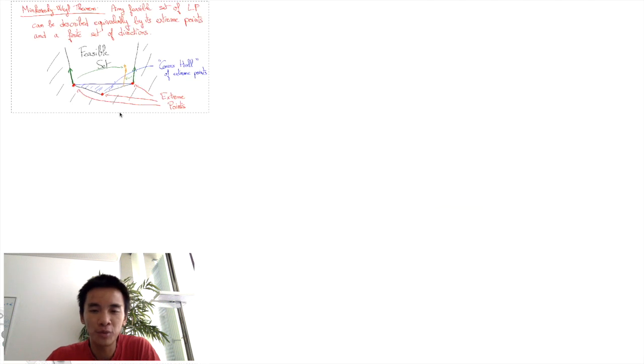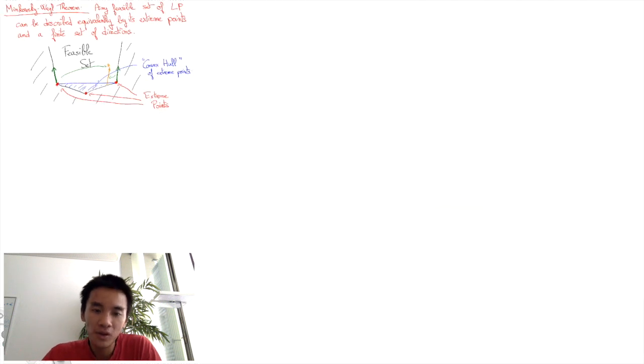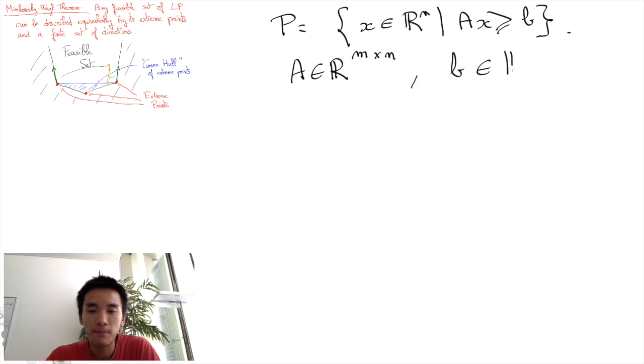Let's get to a more formal version of the theorem. First, recall that a feasible set P of a linear program is a set of points x in R^n such that Ax is at least B, where A is an M by N matrix, and B is a vector of dimension M.